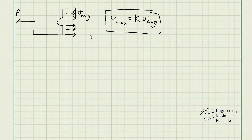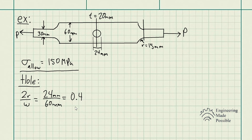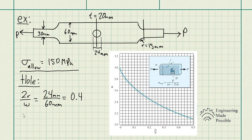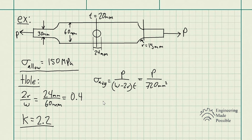Now what happens if you have a hole at the center of this plate? You have the same rectangular plate with the same exact dimensions, the same external load being applied, in tension. If you were to analyze the stress in this plate, once you have a hole, it will introduce a stress concentration. The second the stress is distributed along here and gets close to the hole, with that sudden change in area, this is where you get that larger stress value — a stress concentration.